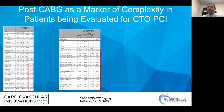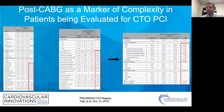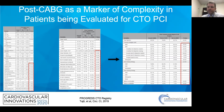You will also see increased anatomic complexity in post-CABG patients comparatively — increased calcium deposition, increased ambiguity, increased JCTO and Progress CTO scores. This translates to an increased need for complex revascularization, including dissection reentry and retrograde techniques, and interestingly an increase in non-balloon-crossable and non-balloon-dilatable lesions because of this increased calcium deposition.